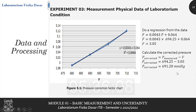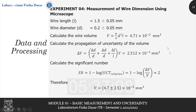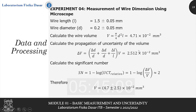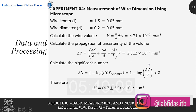In the last experiment, measurement of wire dimension using a microscope, first calculate the volume of the wire using the given formula. Then calculate the propagation of uncertainty of the volume and the significant number so that we can get the final volume of the wire.